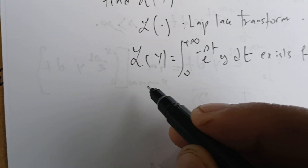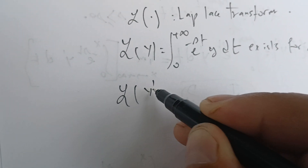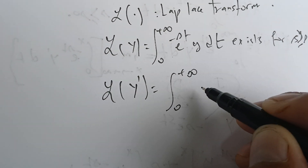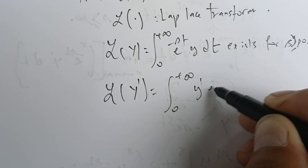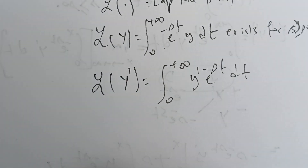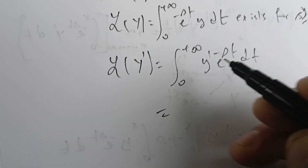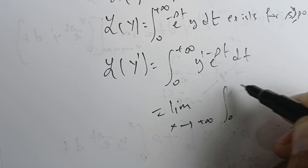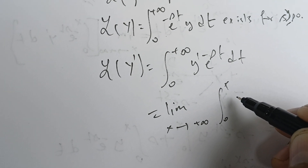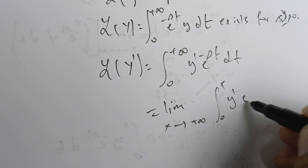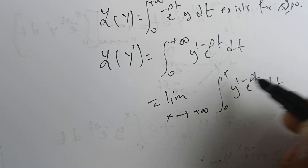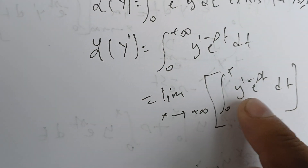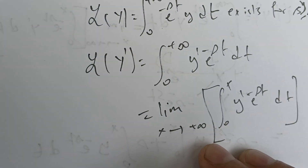That's the key to solving this — finding the Laplace of Y prime. By definition, we can write this as the integral from zero to infinity of Y prime times e^{-st} dt. Using the definition of the improper integral, we have the limit as X goes to infinity of the integral from zero to X of Y prime e^{-st} dt. We'll focus on this integral first, and then take the limit — but when we do so, we'll need to make some assumptions.